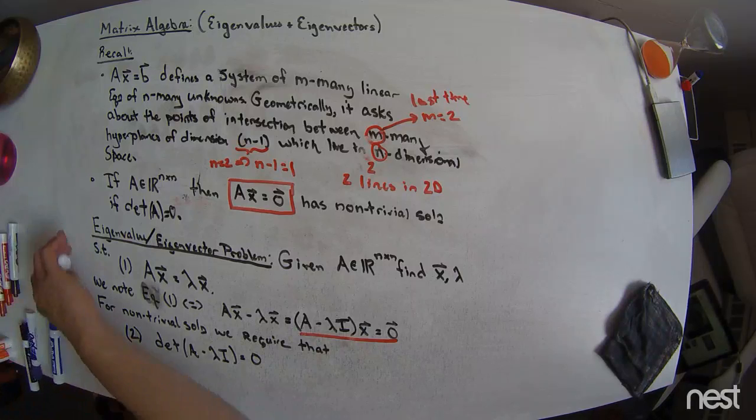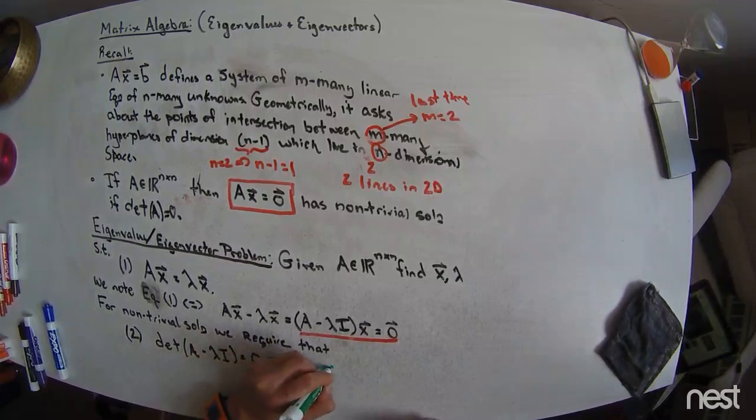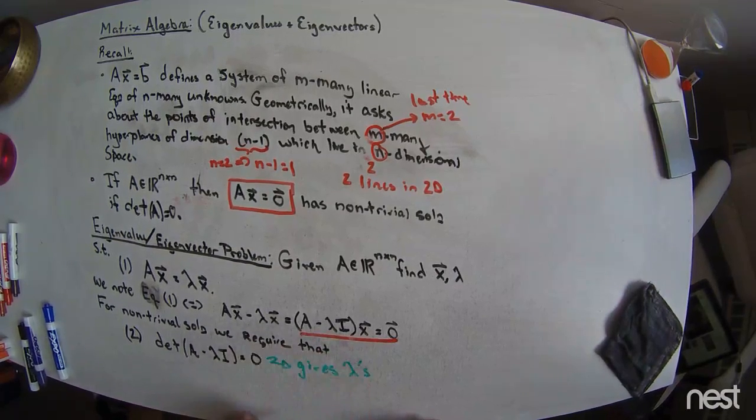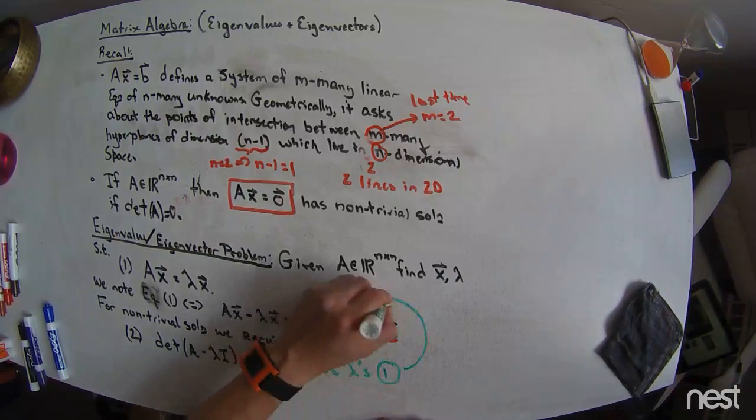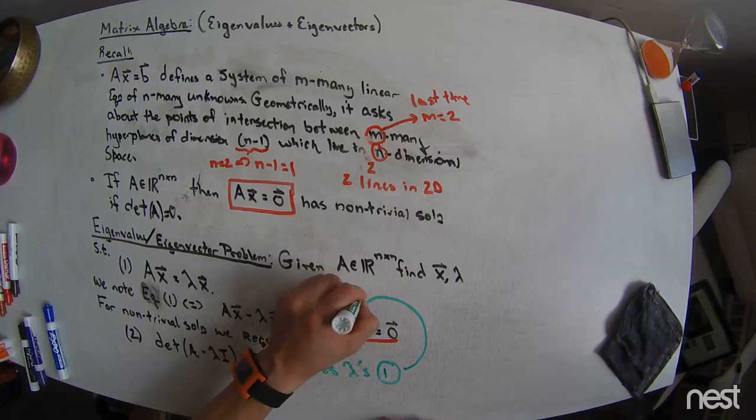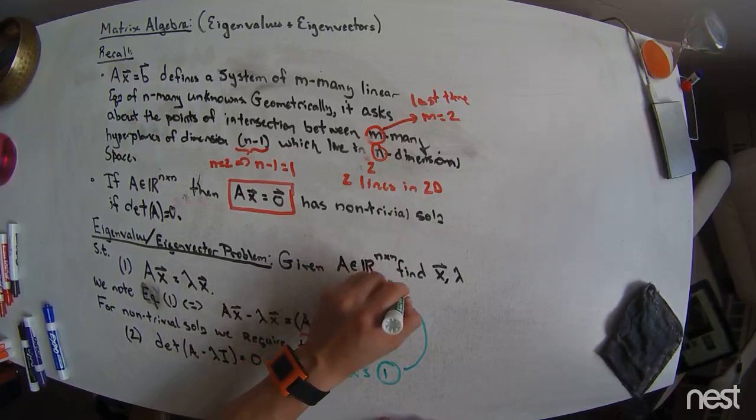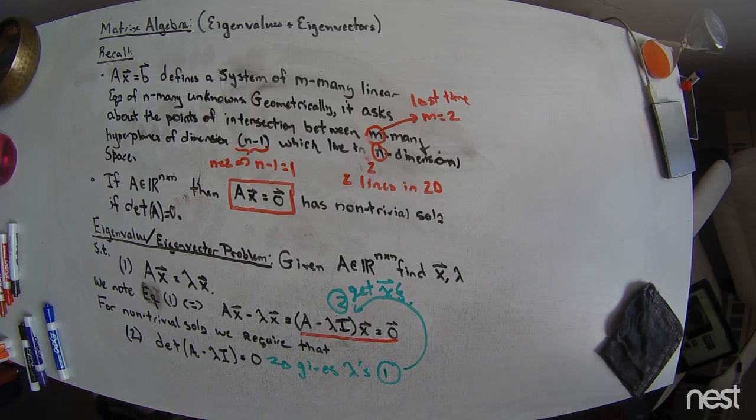And that's all we need. What will happen here is that this equation gives lambdas, and then once we have lambdas, we go back here, and now we get X vectors. And so, that is an eigenvalue-eigenvector problem.